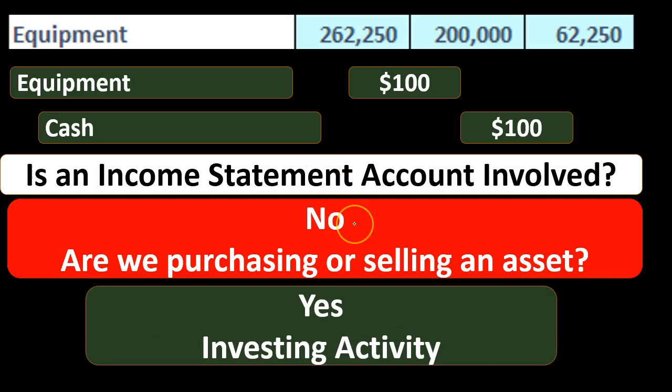Since no income statement account is involved, it's not going to be an operating activity. The next question is: are we purchasing or selling an asset? In this case, yes, we're purchasing an asset, and that means it's going to be an investing activity. Investing activities was a confusing concept for me at first — investing means purchasing any asset we're not consuming now; it's an investment in the future. We're putting money somewhere that's going to help us make money in the future, so that's going to be some type of investing activity.